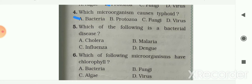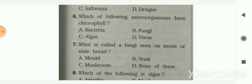Next question: which of the following is a disease? Options are cholera, malaria, influenza, or dengue. Your answer is option A — cholera. Cholera is a bacterial disease.